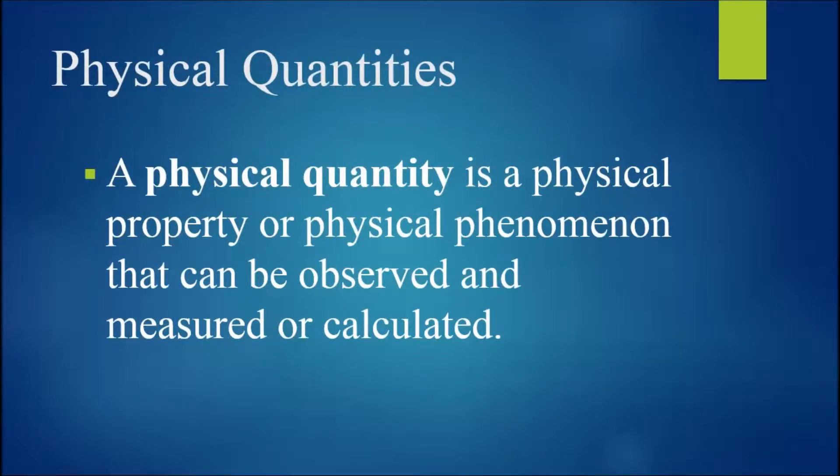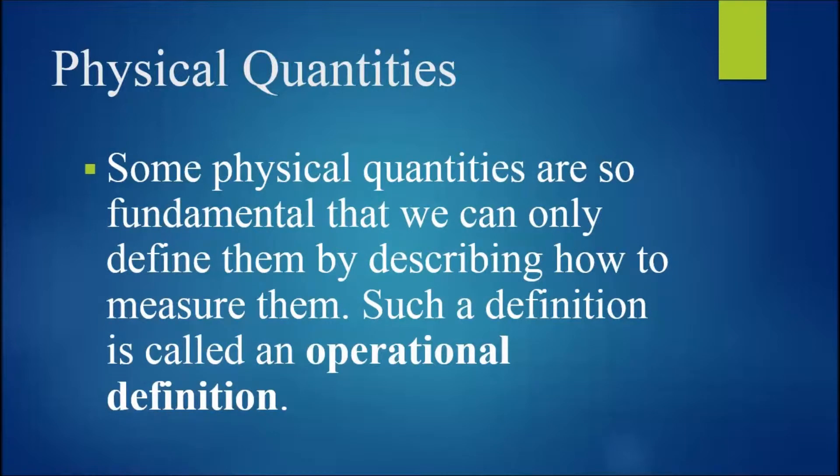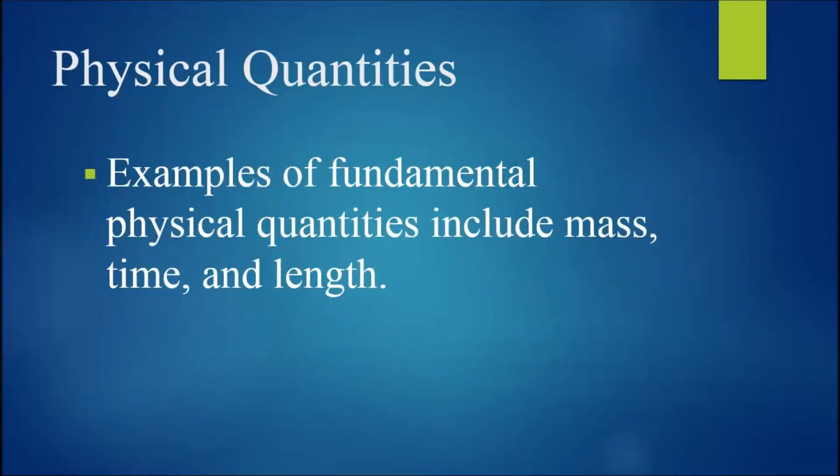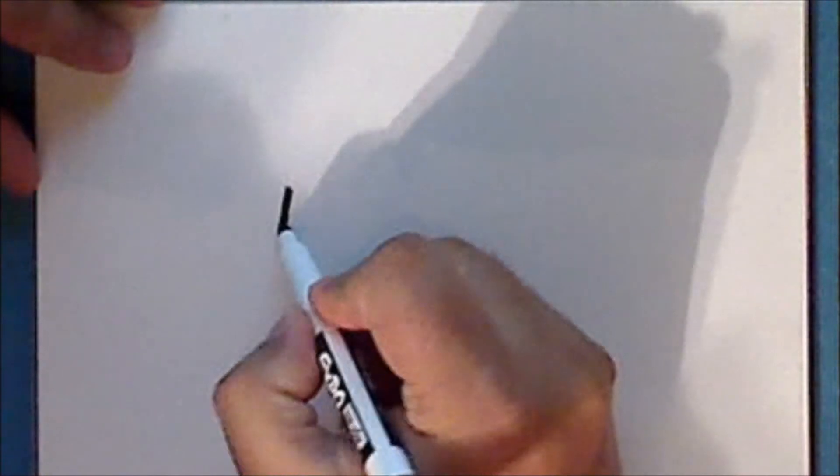We measure what are called physical quantities. A physical quantity is a physical property or physical phenomenon that can be observed and measured or calculated. Some physical quantities are so fundamental that we can only define them by describing how to measure them. Such a definition is called an operational definition. Examples of fundamental physical quantities include mass, time, and length.